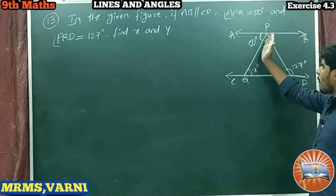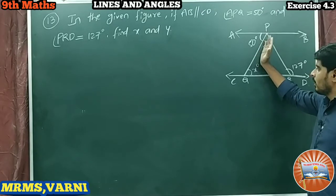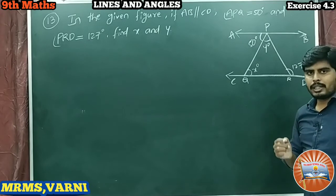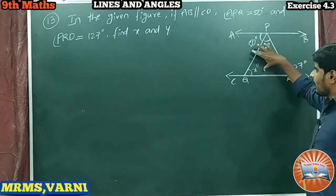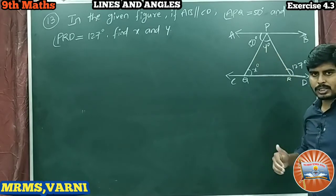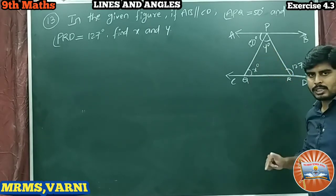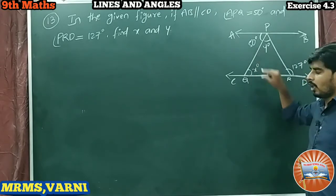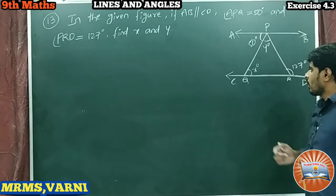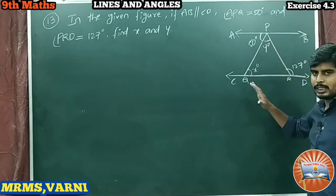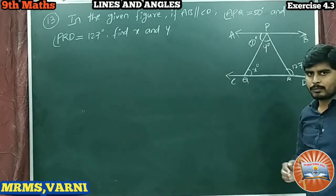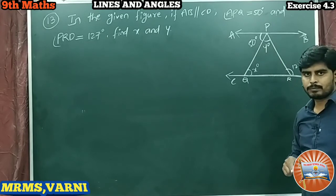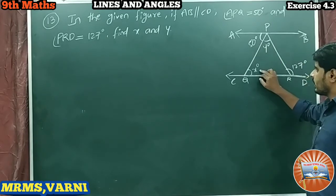If these two are parallel lines and PQ is a transversal, X and 50 degrees are alternate interior angles because they are lying on either side of the transversal, they are interior angles, and they are not adjacent angles. That is why they are called alternate interior angles. Alternate interior angles in parallel lines intersected by a transversal are equal, so X is equal to 50 degrees.